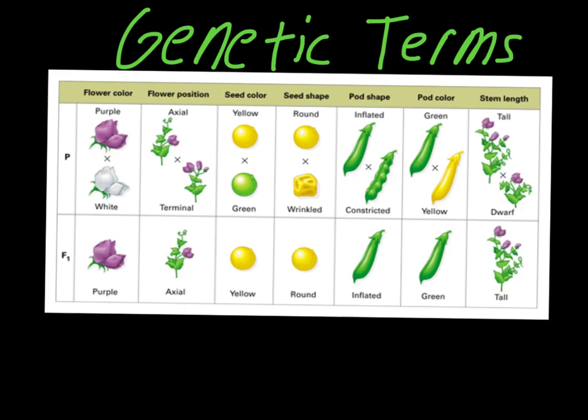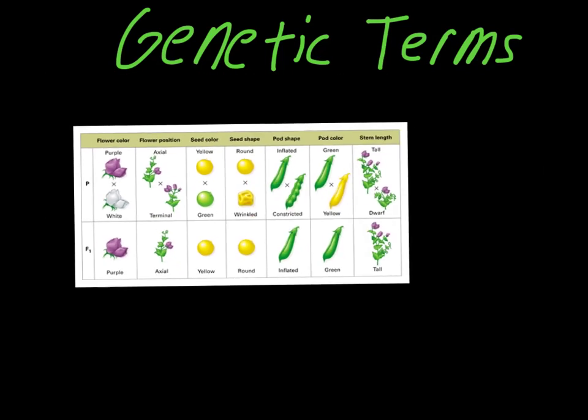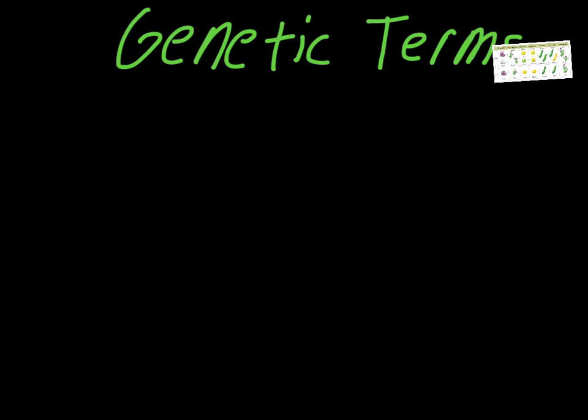So we're looking at another example here. If we look at flower position, and you mix axial and terminal. Remember, axial, the flower's in the middle. Terminal, the flower's at the top. All of the offspring will have axial flowers, which tells us that axial is dominant to terminal. So just to define these a little bit.